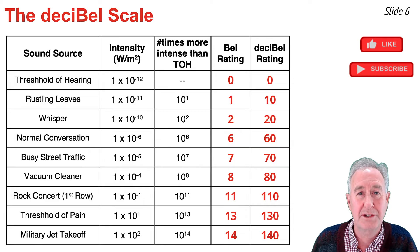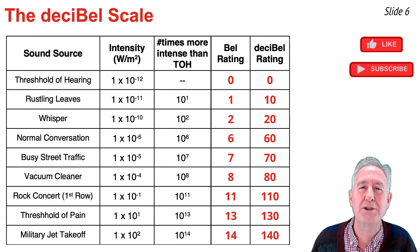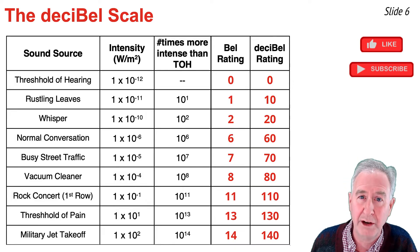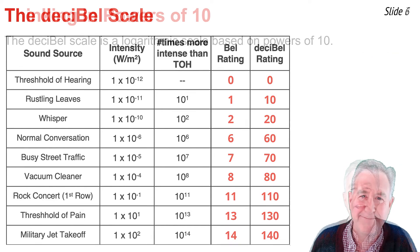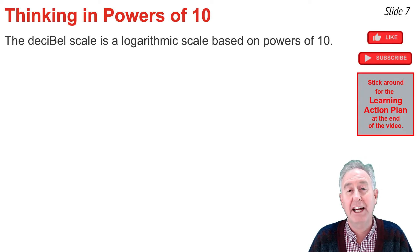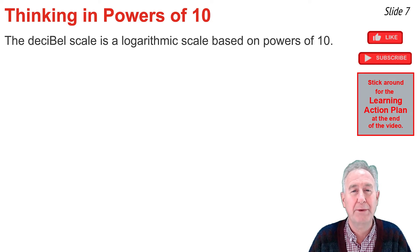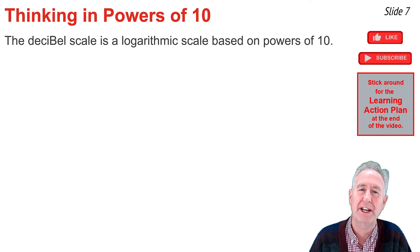The decibel rating is a logarithmic base rating that compares one sound's intensity to the threshold of hearing in terms of powers of 10. The decibel scale is a logarithmic scale based upon powers of 10 that allows you to compare the intensity of any sound to the threshold of hearing — or indeed to any other sound — if you know their decibel ratings.